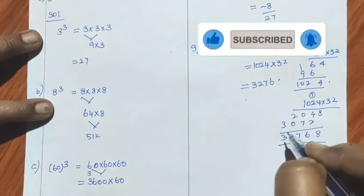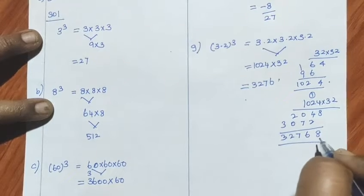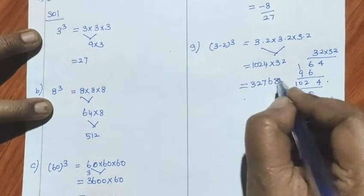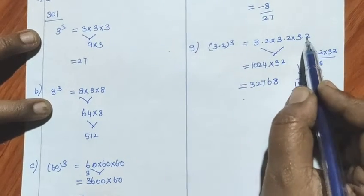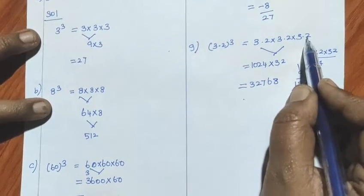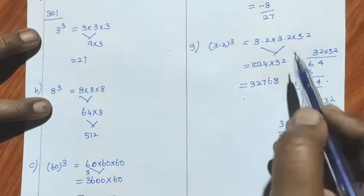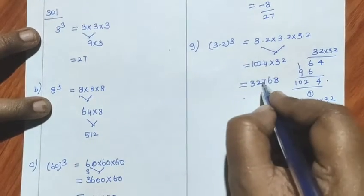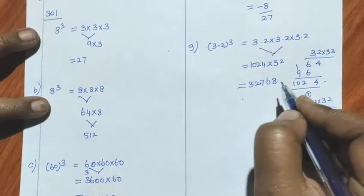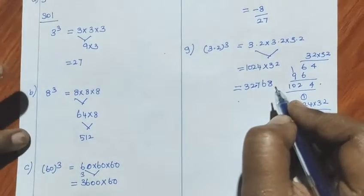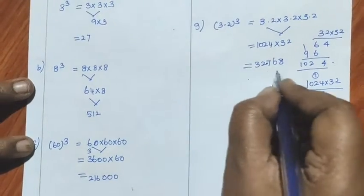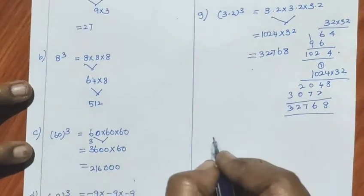32,768. Now place the decimal point: count 1, 2, 3 digits from the original 3.2. So the answer is 32.768.